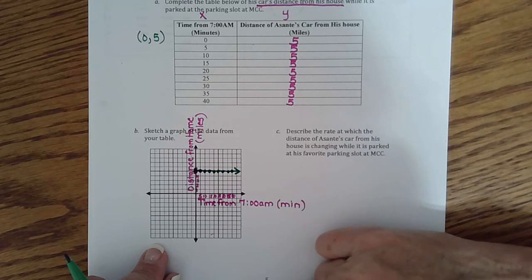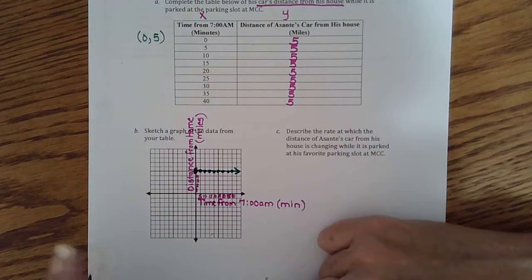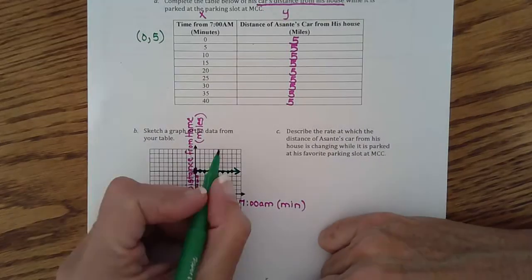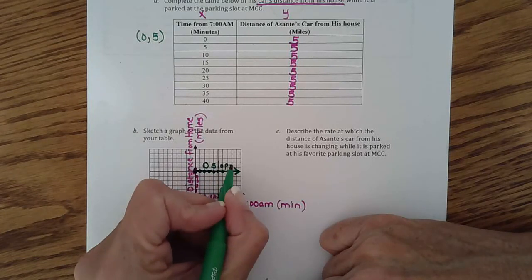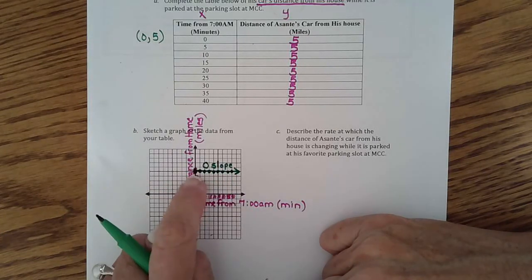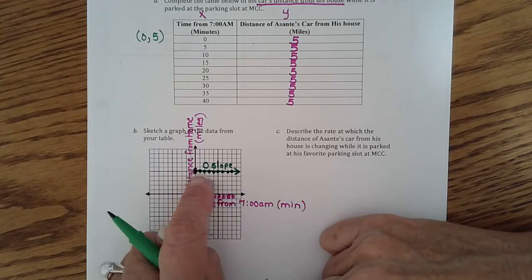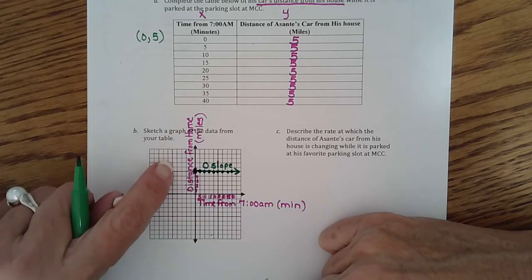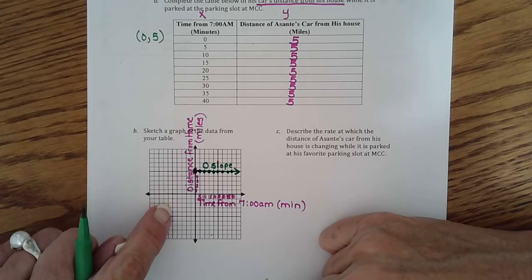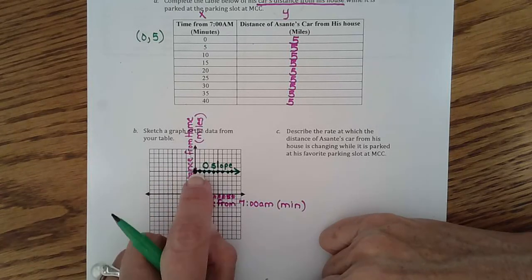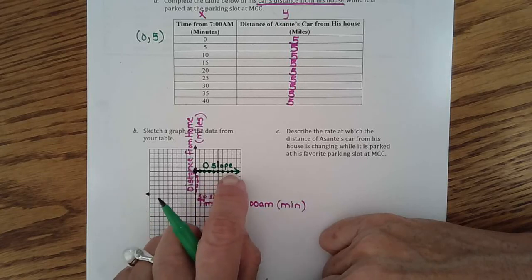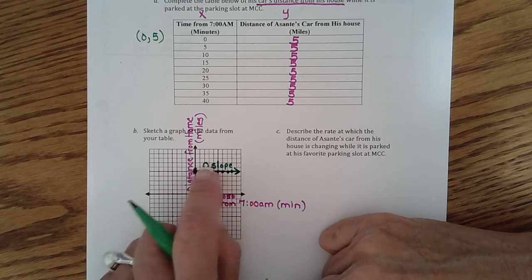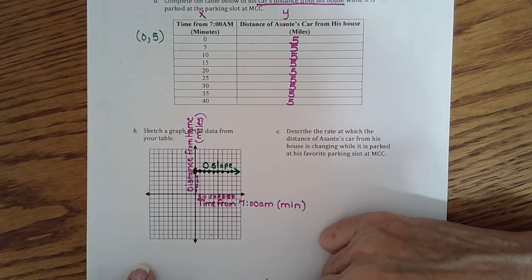So that is my graph. And this is zero slope we learned in Module 6. Remember, we can ski on it, but it's zero fun. When it's vertical, we can't ski, so there's undefined slope. But horizontal means we're not changing. We're staying the same, staying the same, staying the same, five miles from home. So it's zero, because we're not moving.